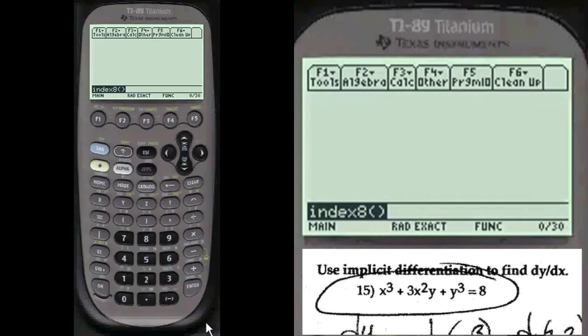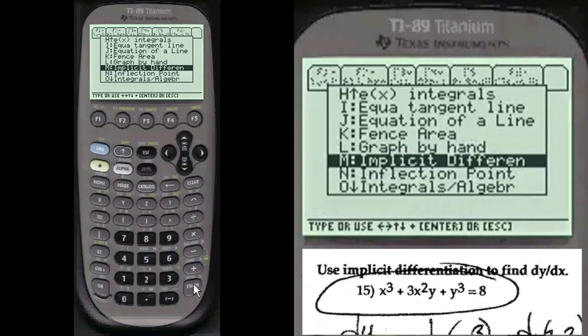Index 8 to get to my menu and we press enter. We're already at implicit differentiation so I'm going to go there, you can scroll to that.